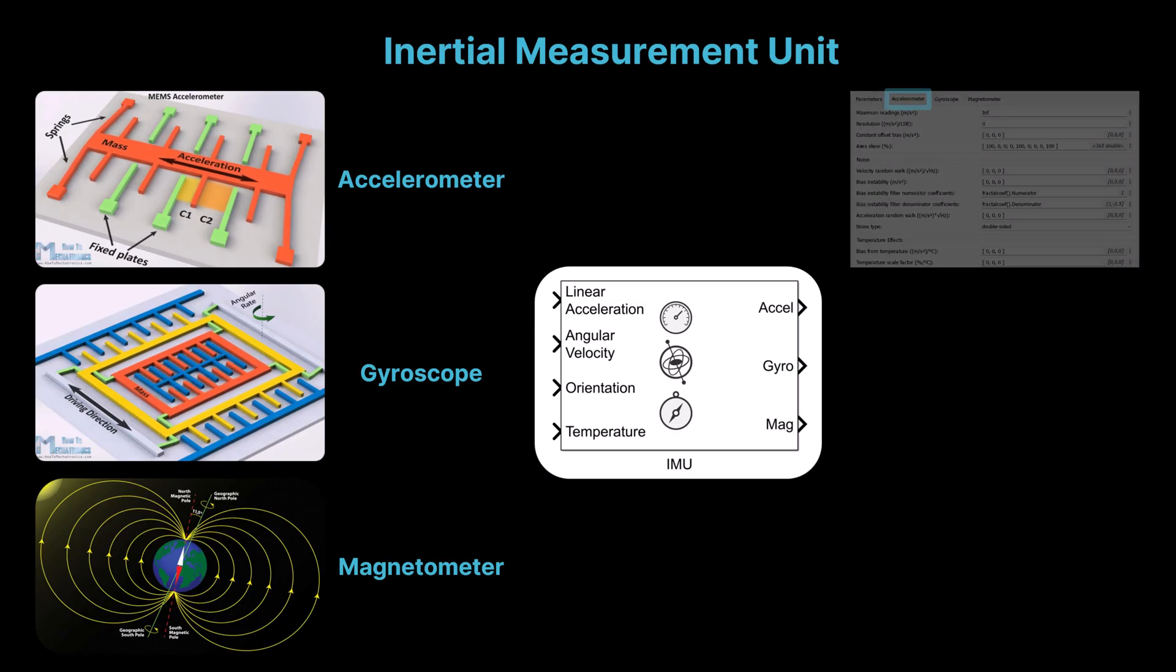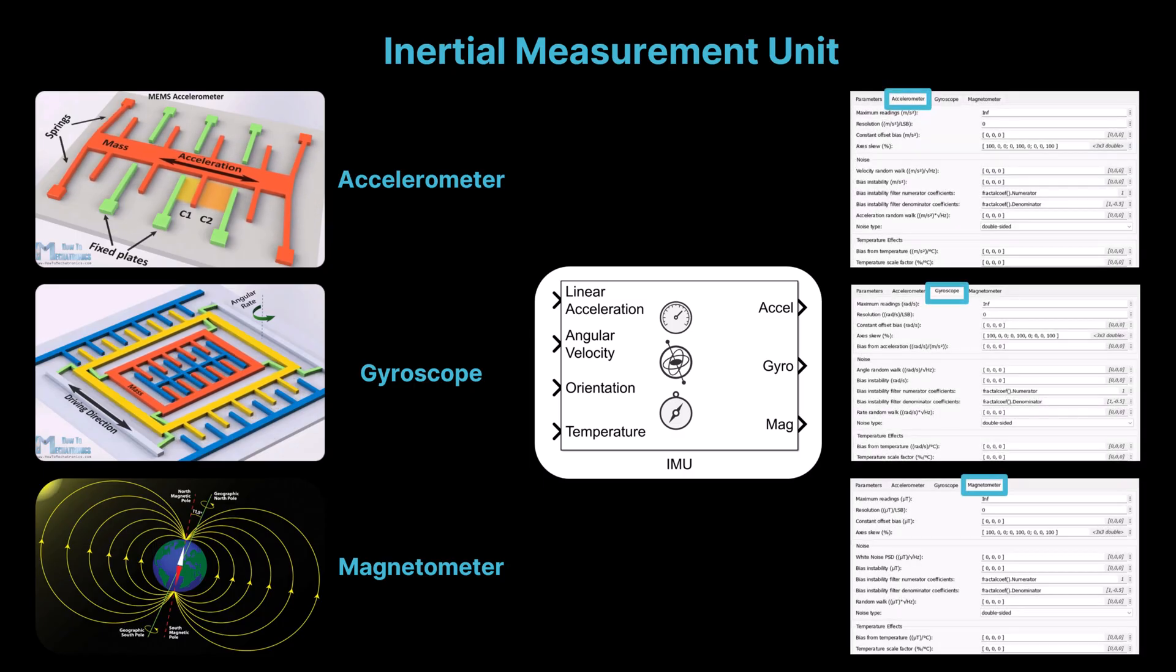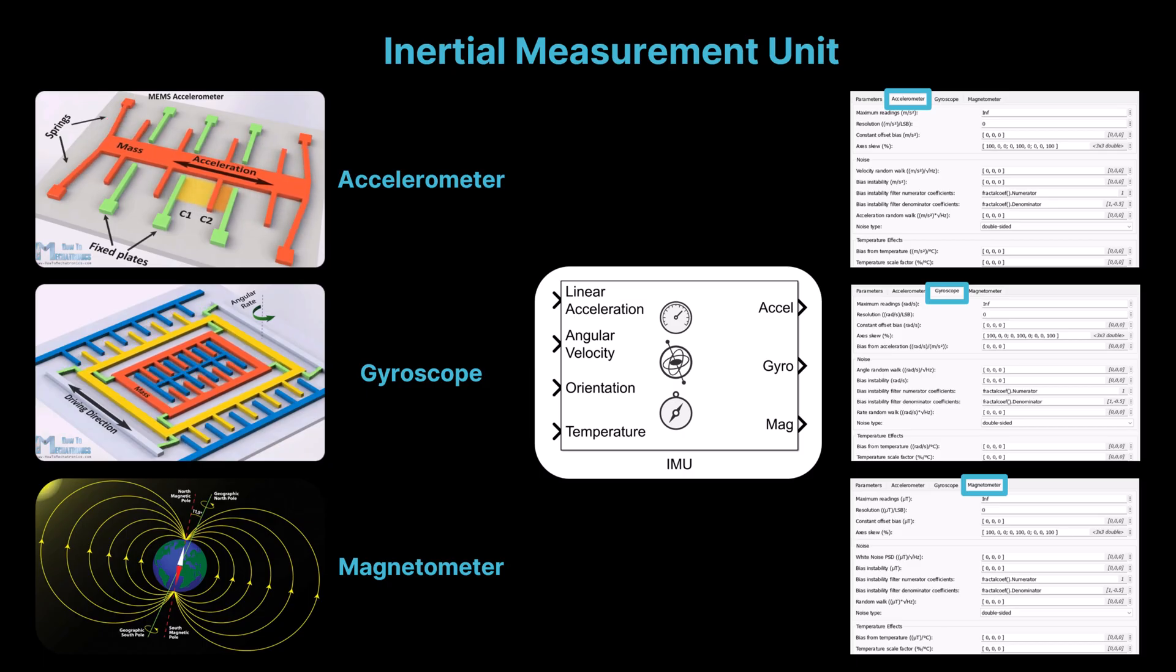In Simulink, we can model an IMU to simulate acceleration, angular velocity and magnetic field outputs based on the motion of a vehicle. The IMU model can also include its typical characteristics like sensor noise, bias and drift, enabling realistic testing of navigation, estimation and sensor fusion algorithms.